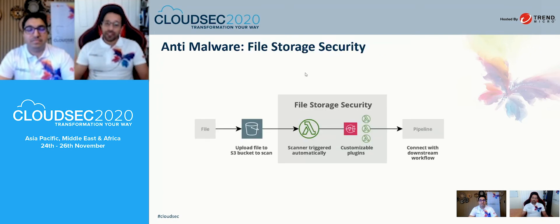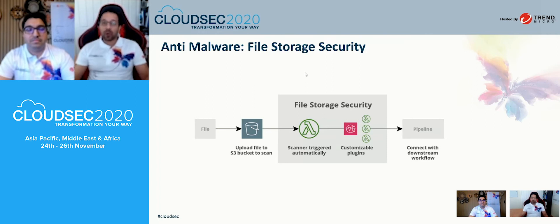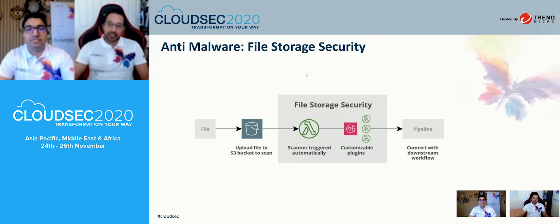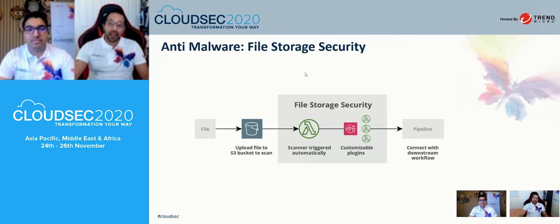With Trend Micro File Storage Security, it doesn't matter where the object comes from or how it gets to us — whether we're using a server architecture, a serverless architecture, or a direct user-to-bucket architecture. All that matters is that when the object hits the bucket, we automatically scan it for malware. The beauty of the solution is customizable plugins: you choose what to do with that object — delete it, send a notification, or move it to a quarantine bucket.